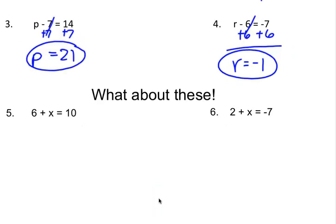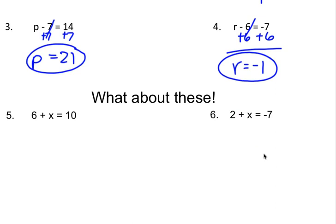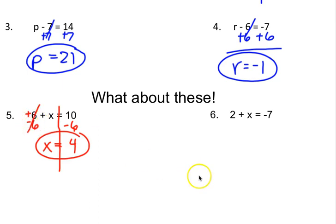Alright, what about these? These look a little bit different — why are they different? I have a number or coefficient in front and then the variable follows behind it. These tend to trip people up because you can't tell whether they're positive or negative. So this 6 out front is a positive 6 — the opposite of a positive 6 is going to be a negative 6. What I do to one side I do to the other side. A positive 6 and a negative 6 go to 0. I bring down x, bring down my equal sign, and 10 take away 6 is going to be 4. On number 6, I have a positive 2 out front, so the opposite of a positive 2 is a negative 2. I'm going to do that to both sides — 2 minus 2 goes to 0 leaving me with x equals, and then negative 2 and negative 7 are the same sign so I'm going to add them to get 9 and keep the sign — negative 9.